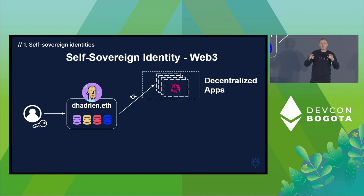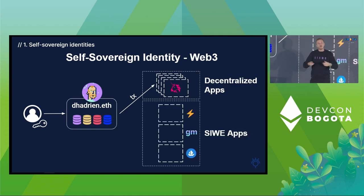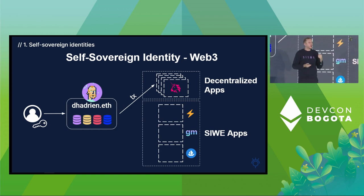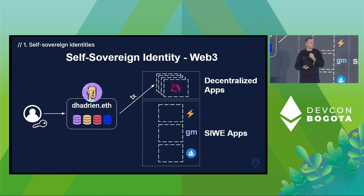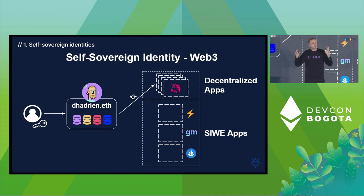Self-sovereign accounts are actually bigger than blockchain. You can use the private key to send transactions and use decentralized applications, but also to log into an app — that's Sign-In with Ethereum. Using Snapshot or other applications, you now have login systems based on wallets. Instead of email and password, you log in with your wallet. Self-sovereign identity accounts are actually better than traditional accounts, even for Web2 stuff.